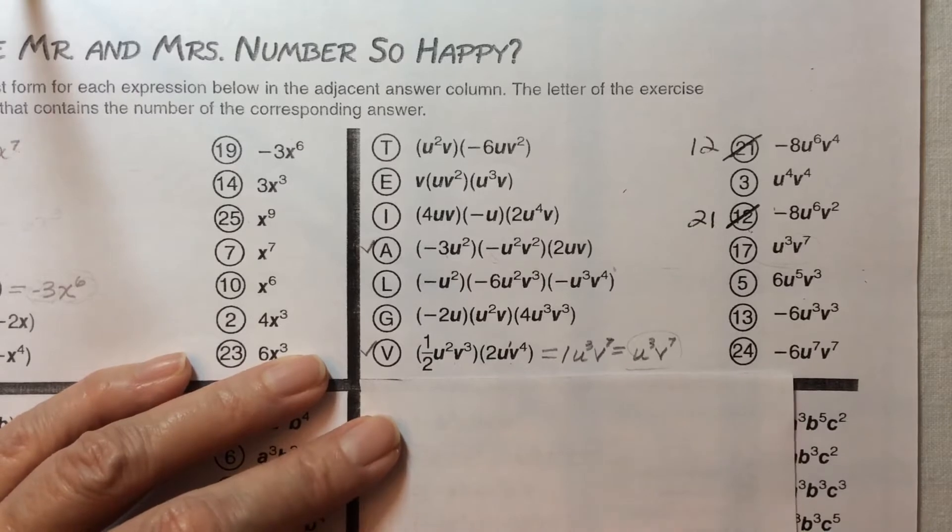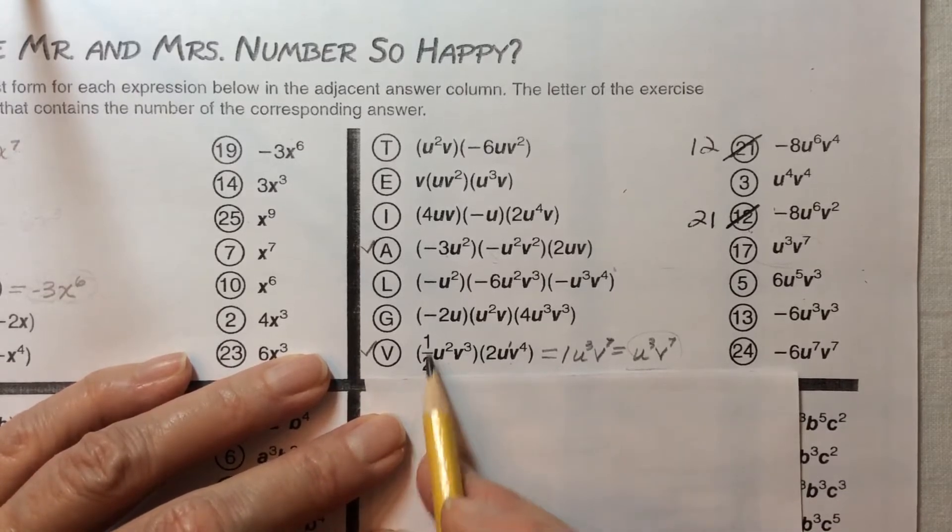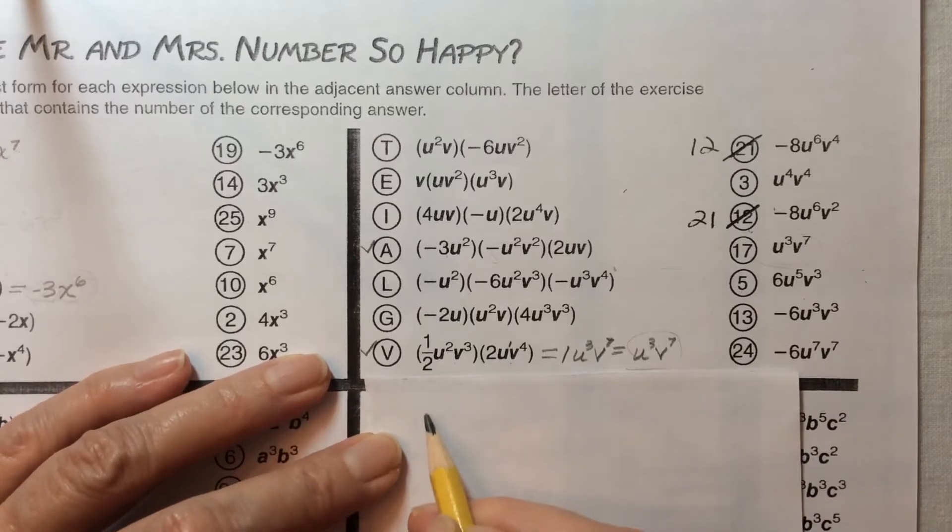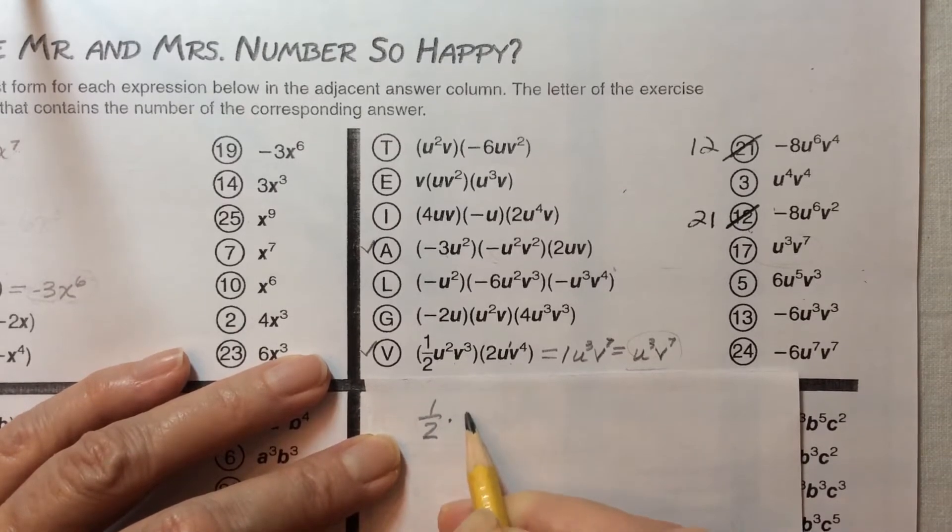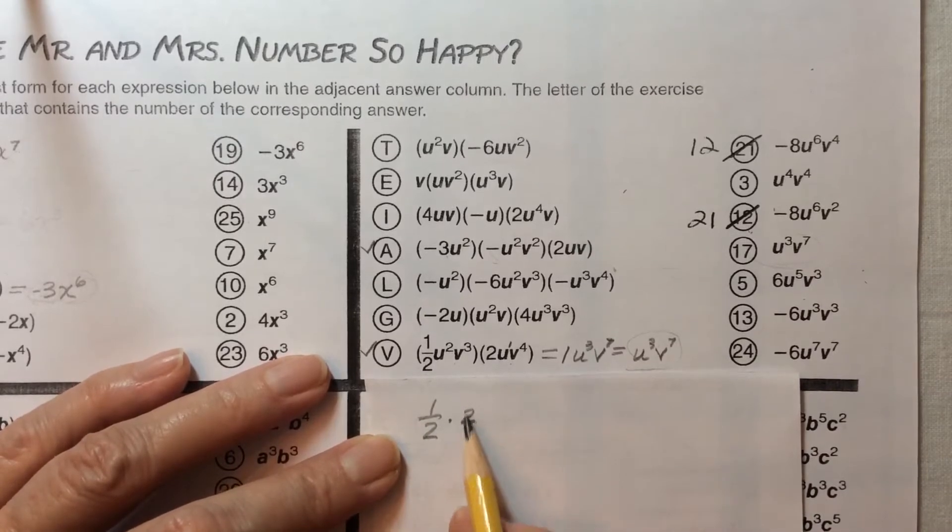So what we're going to do first is look at the coefficients. So 1/2 times 2. So 1/2 times 2 looks like that at first but we know 2 is really 2/1.